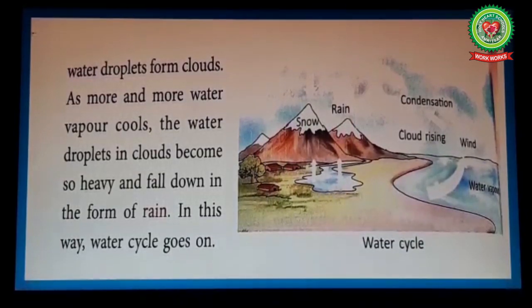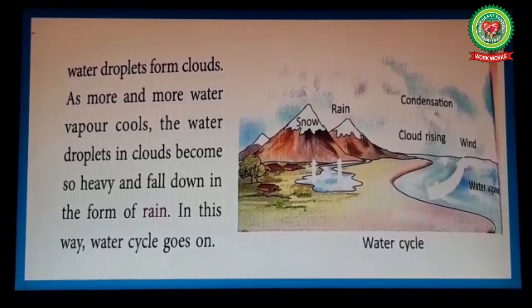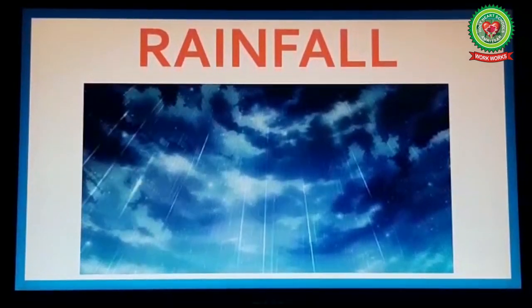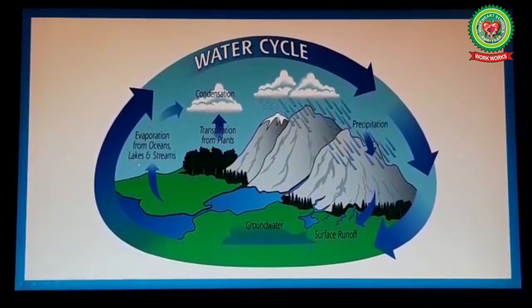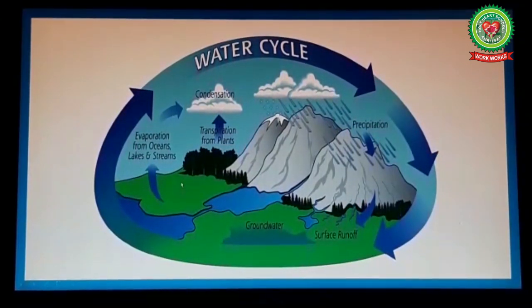The water droplets become heavy and fall down in the form of rain — in this way the water cycle goes on. When clouds become heavy, they fall down on the earth's surface as rain, and when rainfall occurs, it fills the water bodies like oceans, rivers, seas, etc. Therefore, we never run out of water.